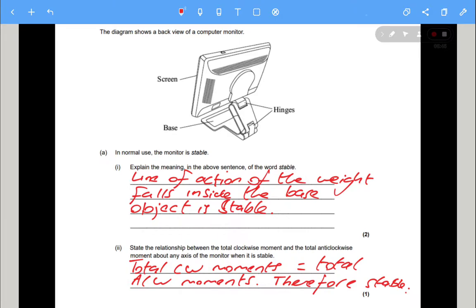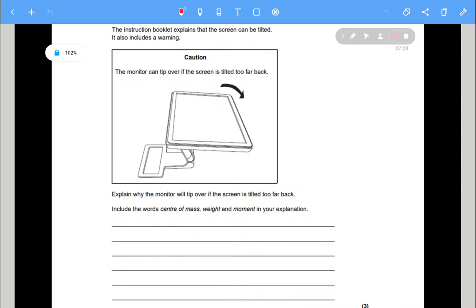Hopefully that makes sense. Let's move on then. So if you want to have a go at this one, if you want to pause, and then I'll take you through the answers. So this one says the instruction booklet explains that the screen can be tilted. It also includes a warning. The monitor can tip over if the screen is tilted too far back. Explain why the monitor will tip over if the screen is tilted too far back.